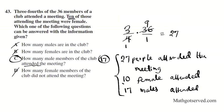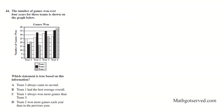Let's move on to question 44. It says the number of games won over 4 years for 3 teams is shown on the graph. Which of the statements is true? Option A says team 3 always came in 2nd. Team 3 is the one in gray. 2nd here is good, but it's 3rd here. So that doesn't work. Option B says team 1 had the best average overall. We can calculate this, but that will take some time. Let's see if there's an easier option to figure out. I'll put question mark here.